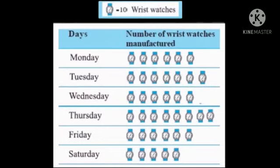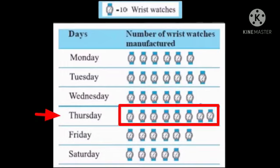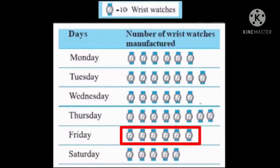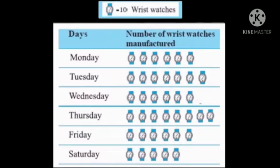For Wednesday, 60 watches are made, so six pictures are drawn. For Thursday, 80 watches are made, so eight pictures have to be made. For Friday, 60 watches are made, so six pictures have to be made. For Saturday, 50 watches are made, so five pictures have to be made. This is the final pictograph.